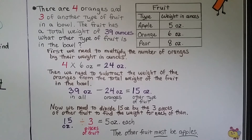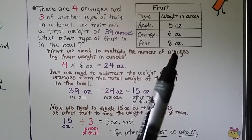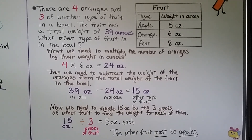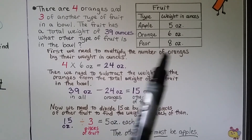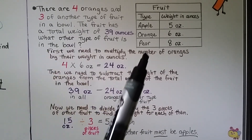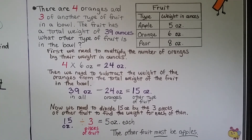Many times, word problems will have unnecessary information that we don't need and don't use. Do you see the unnecessary information in this table? If you said the information about the pears, you're correct. It didn't mention anything about pears, but it was in the table — we just didn't need it. It was unnecessary information.